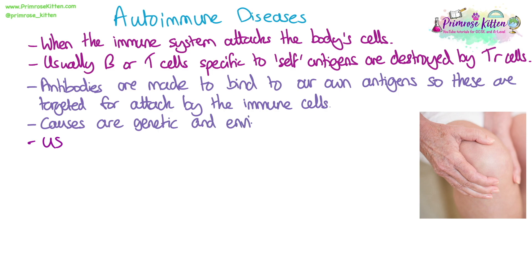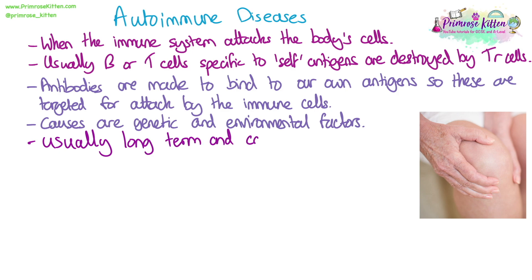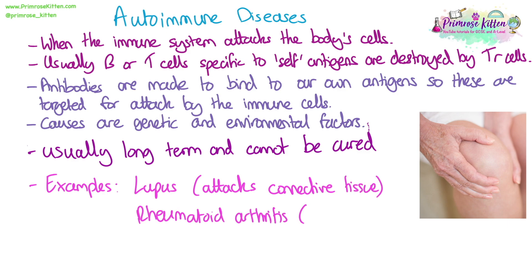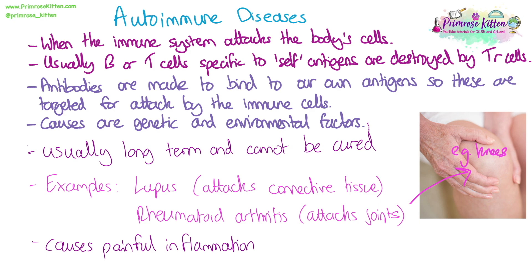The causes of autoimmune diseases are not fully understood, but are thought to involve a combination of genetic and environmental factors — it is unclear what triggers the disease, especially when it starts later in life. These diseases are usually long-term and cannot be cured. Examples include lupus, where connective tissues are attacked, and rheumatoid arthritis, where the joints are attacked; both cause pain and inflammation.